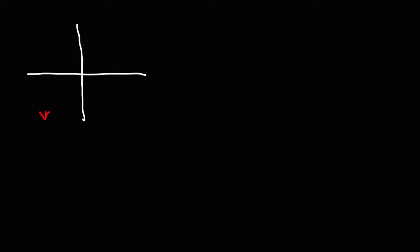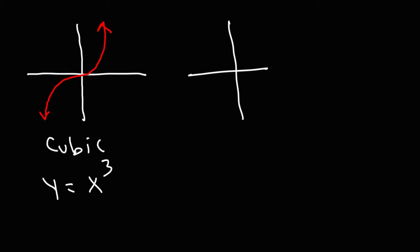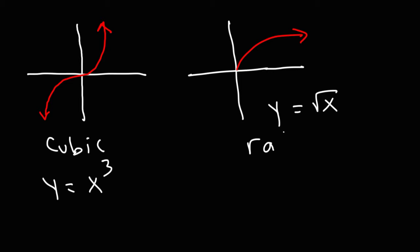The next example is called a cubic function, and the parent graph is y equals x cubed. After that, we have y equals the square root of x — that's a radical function, also called a square root function.